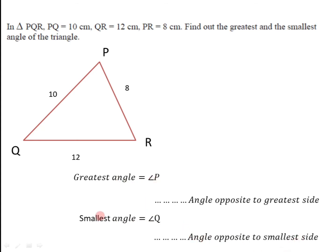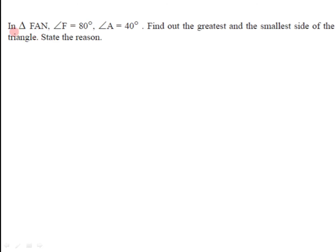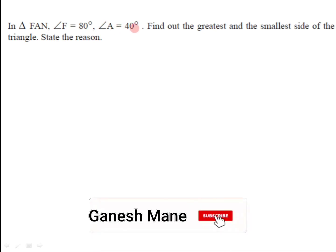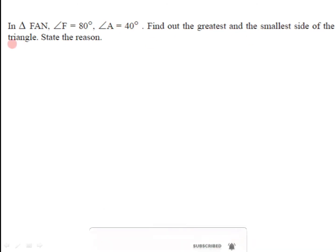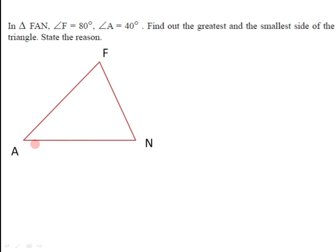So angle P is the greatest angle and angle Q is the smallest angle for this triangle. Let us have another question. For triangle FAN, the measure of angle F is 80 degrees and the measure of angle A is 40 degrees. Find out the greatest and the smallest side of the triangle. We need to draw a diagram.